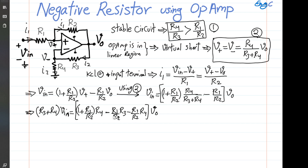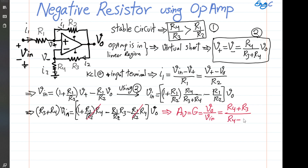The R1 over R2 times R4 terms cancel out, and what remains is R4 minus (R1 over R2) times R3. Moving that to the denominator, the voltage gain Av equals Vout over Vin, which is (R3 plus R4) divided by (R4 minus R1 over R2 times R3). This is Equation 3.